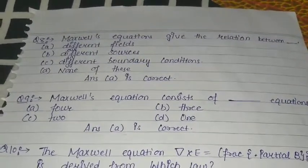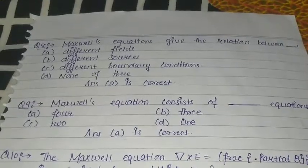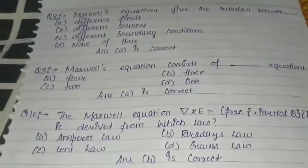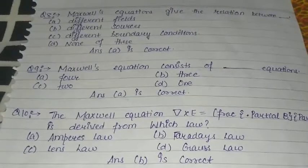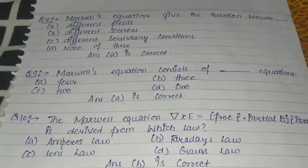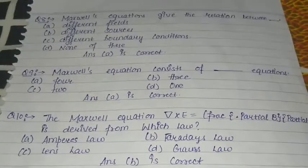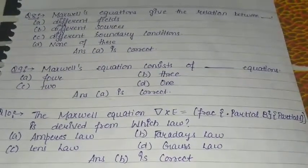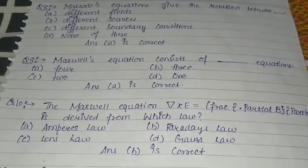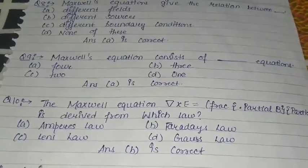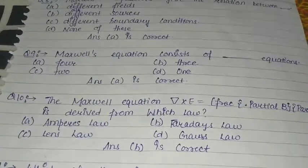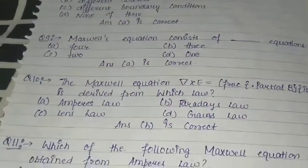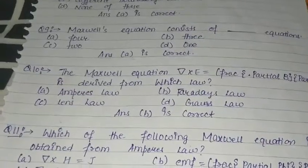Question number nine: Maxwell's equation consists of how many equations — A. four, B. three, C. two, D. one. Here option A is the correct answer: four. Question number ten: The Maxwell's equation del cross E is equal to negative partial B by partial T — is derived from which law? A. Ampere's law, B. Faraday's law, C. Lenz's law, D. Gauss's law. It is derived from Faraday's law, so option B is the correct answer.